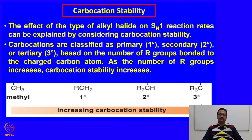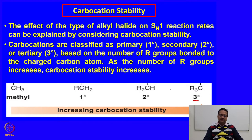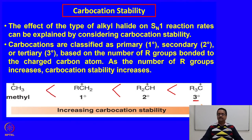Carbocations can be classified as primary, secondary and tertiary based on the number of alkyl groups connected to the charged carbon. As the number of R groups increases, the carbocation stability increases. So a tertiary carbocation has higher stability compared to a secondary, and secondary has higher stability compared to primary, while the methyl carbocation is the least stable.